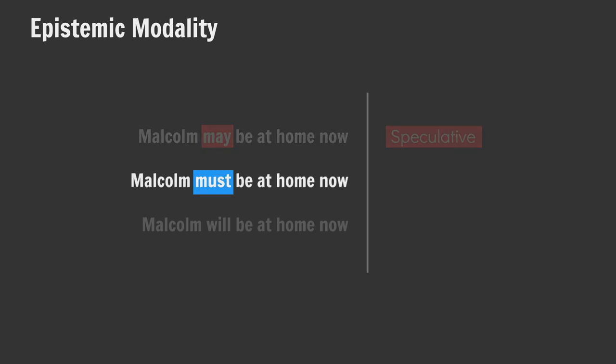'Malcolm must be at home now' is an example of deductive modality. Deductive modality implies inference from observable evidence and, at least in English, signals that the speaker is confident in their conclusions. Maybe the lights are on in Malcolm's house and his car is parked outside. The speaker deduces that the most reasonable, if not the only possible conclusion, is that Malcolm is indeed at home.